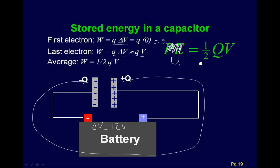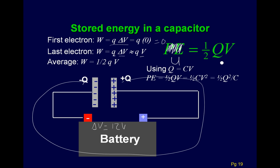So U = ½QV is the total charge times the total voltage, divided by two. You can also express this in different ways using our capacitor equation Q = CV. So if you know any two of these quantities, you can figure out the potential energy stored. For potential energy, we use U in our class.